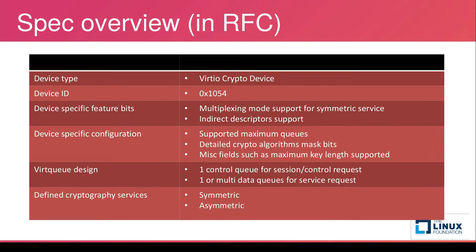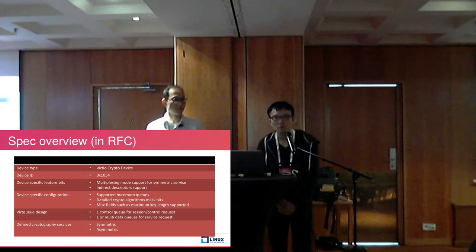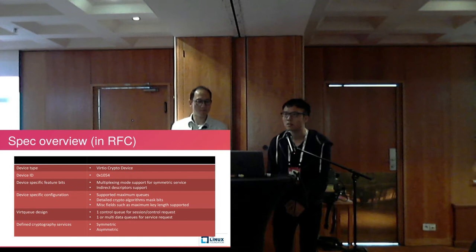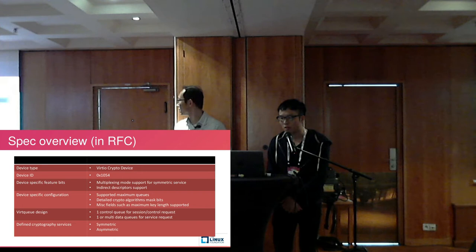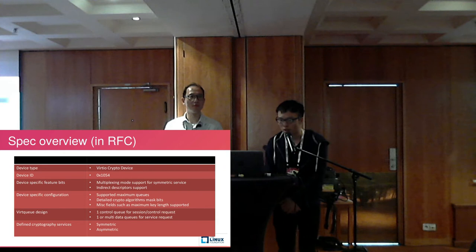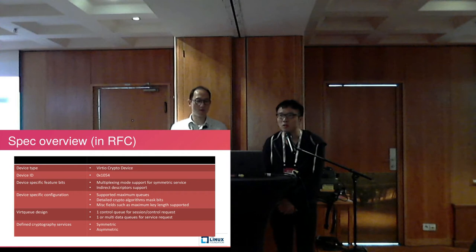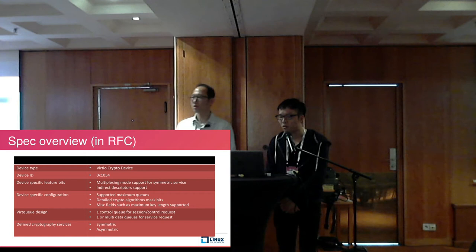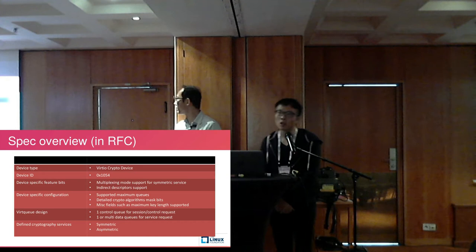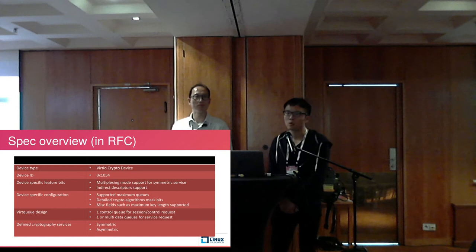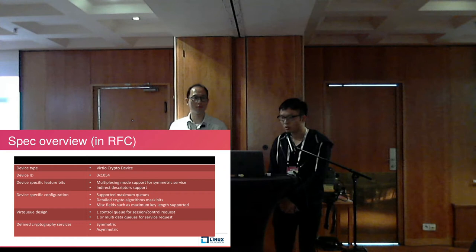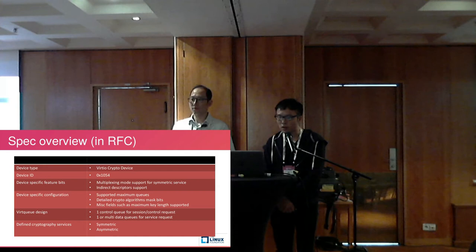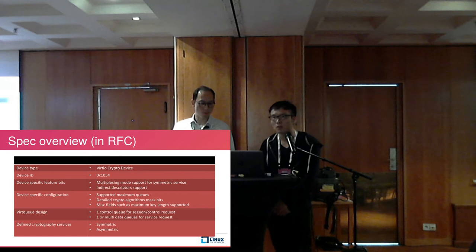Let's see the specification of the virtual crypto device. The device ID is 0x1054. The virtio crypto device has specific feature bits and a specific configuration. The feature bits are used to support multiplexing mode for symmetric service. The specific configuration includes the number of maximum queues and the detailed crypto algorithm mask bits, as well as other fields such as the maximum key length supported. The virtio crypto device has one control queue for session or control requests, and one or more data queues for service requests. Currently the crypto device defines two kinds of crypto services: symmetric and asymmetric.